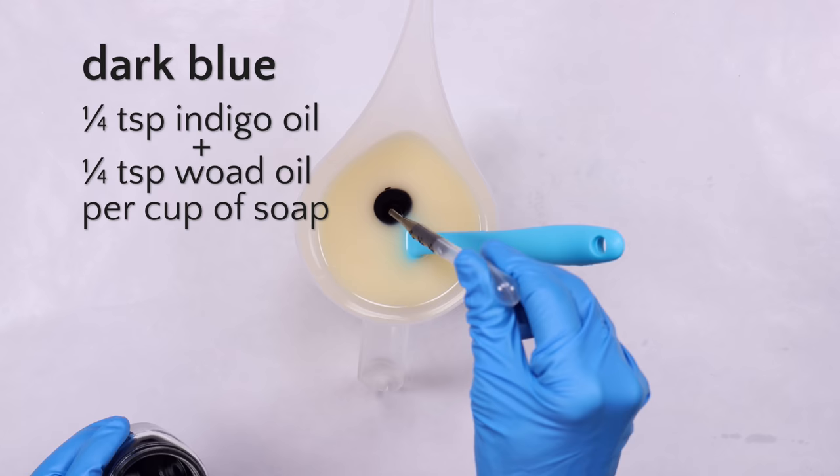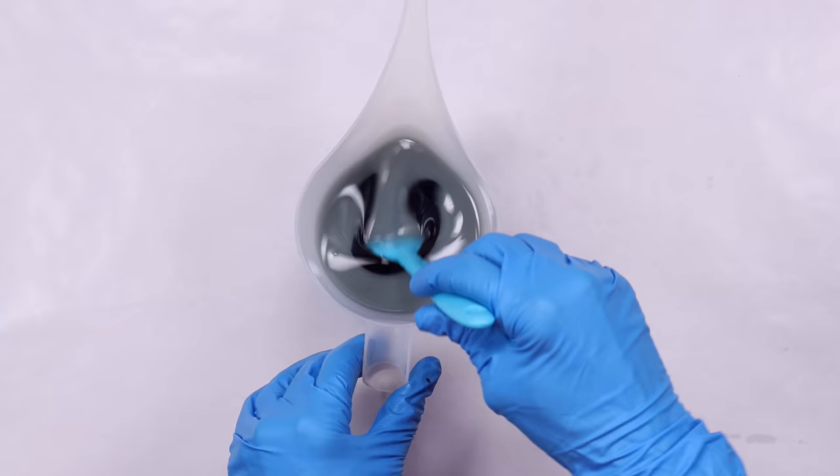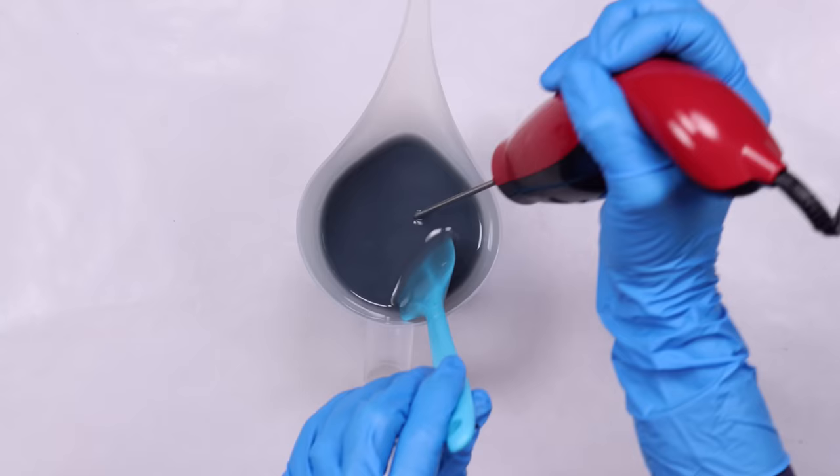For the dark blue colored soap, I added about one quarter teaspoon of the indigo oil to one cup of soap. To try and match the dark blue in the Soap Challenge color palette, I also added a little woad oil. However, as you'll see from the finished soap, I don't think it really helped at all and I could have just used the indigo by itself.